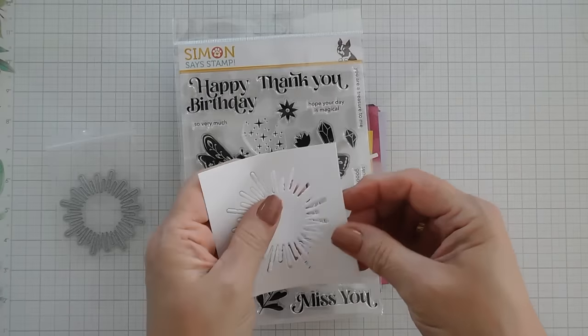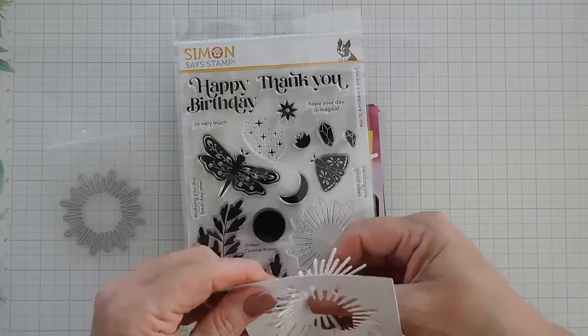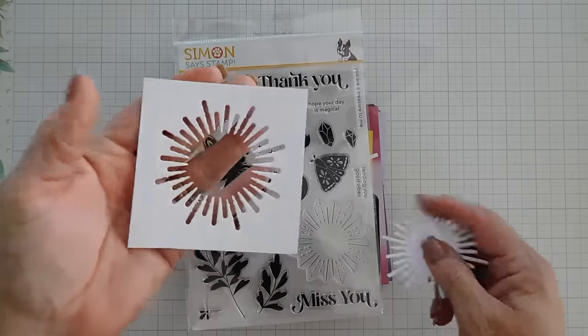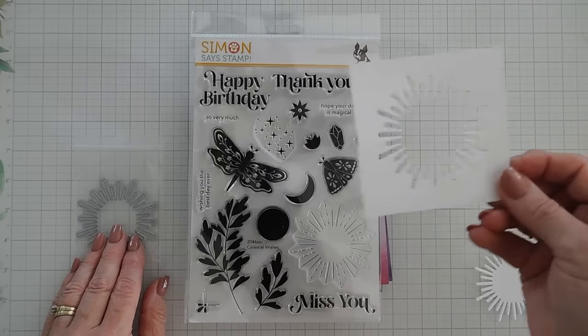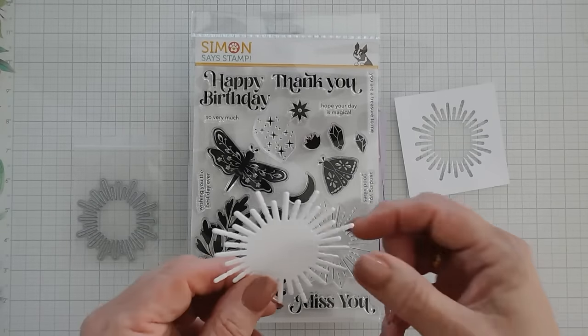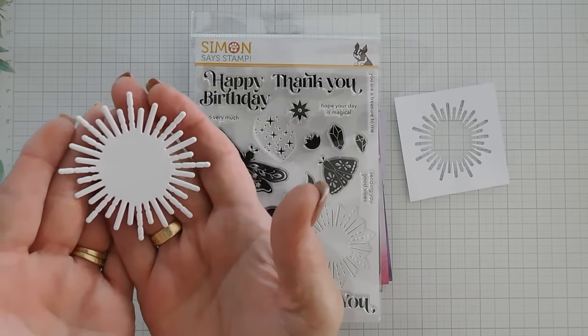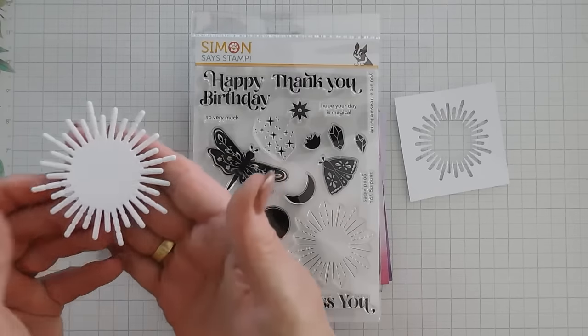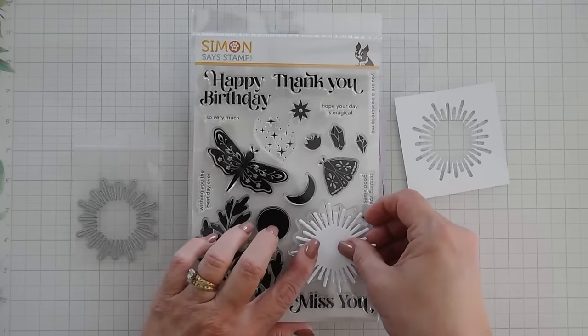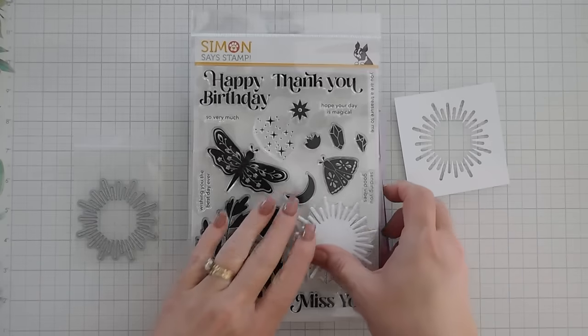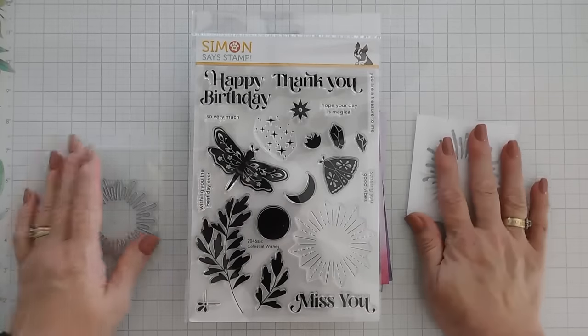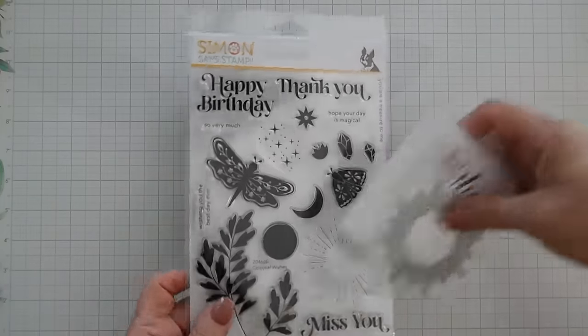I went ahead and die cut it out and I kept the negative because you can actually use the negative too. Look how fabulous the negative is of this. Fabulous on the negative and then it's fabulous on the positive. So this is a great standalone die but this will cut out that sunshine there. So I love that they include that in our kit this month. So those are included.